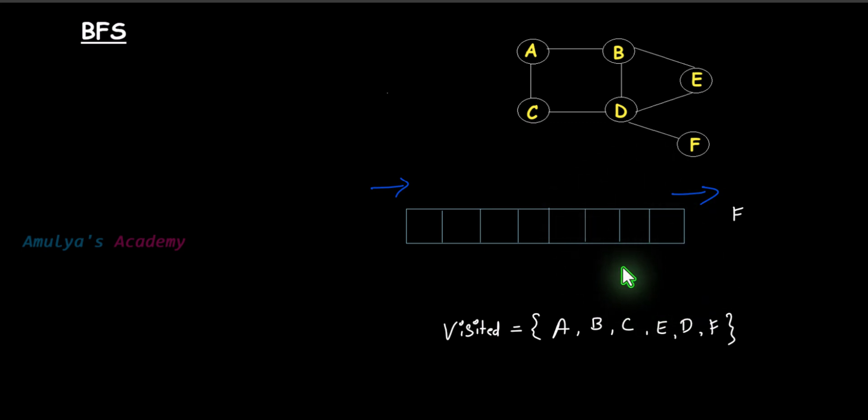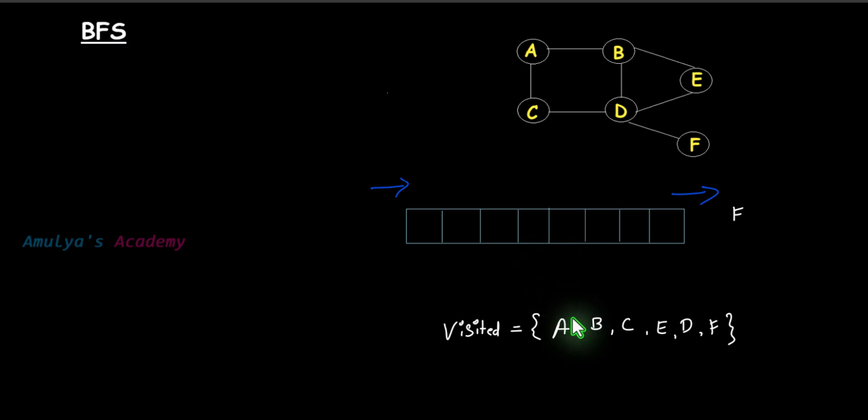Next, remove F from the queue and add all unvisited adjacent nodes of F — there are none. The queue is now empty, there are no more nodes to remove, so we are done. When the queue is empty, we are done. All nodes are visited — this is how the BFS algorithm works and how the queue data structure is used in BFS. Thank you for watching, don't forget to subscribe, and I'll see you in the next class.